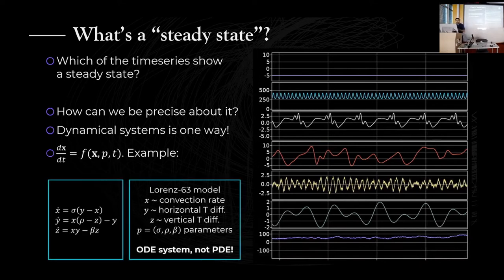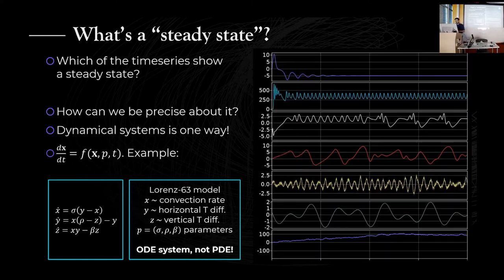One example is something you are most likely familiar with, something called the Lorenz model, that describes how air works in a box, but without actually taking the spatial dimensions of the box into account. So this is an ordinary differential equation system, not a partial differential equation system, but it's a dynamical system nevertheless.